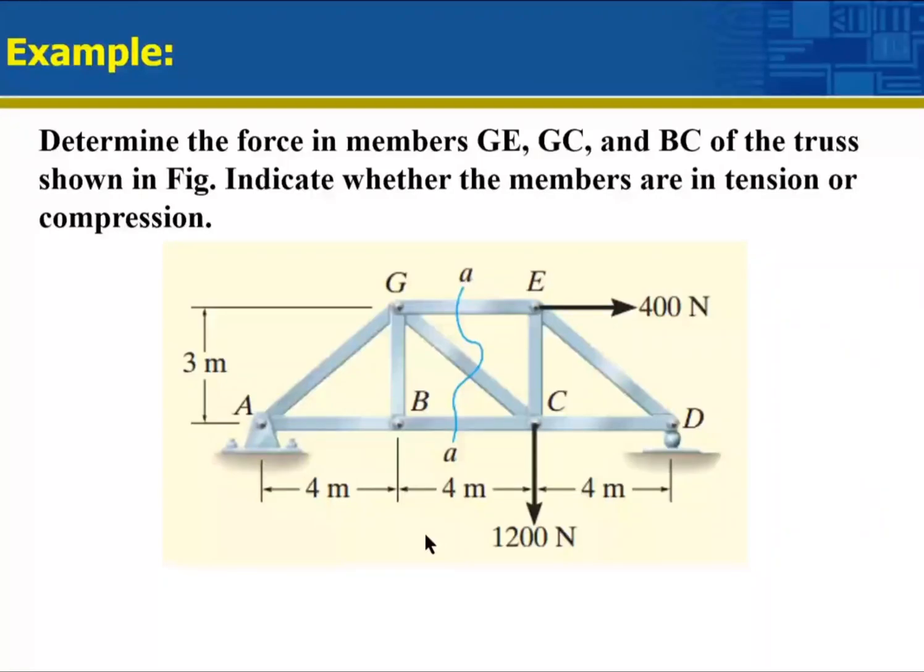It says here determine the force in member GE, where is GE? That's GE. We need to find a force in this member, GC, that's GC, and BC, that's BC. All the truss shown indicate whether the members are in tension or compression.